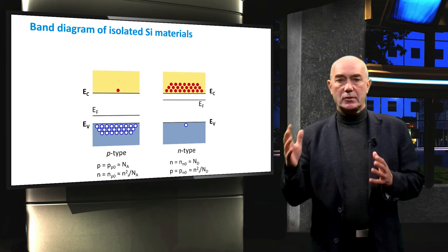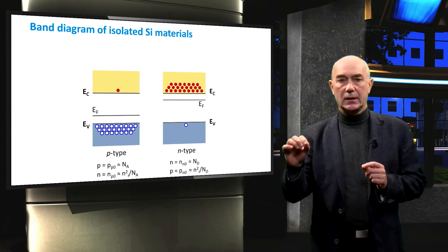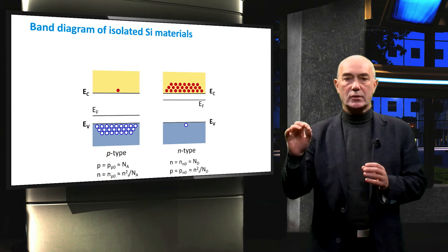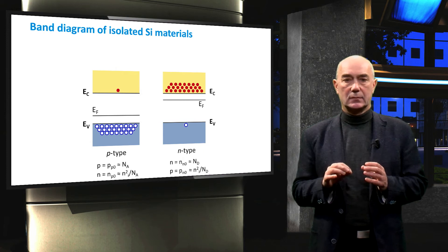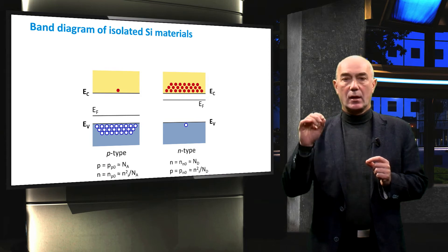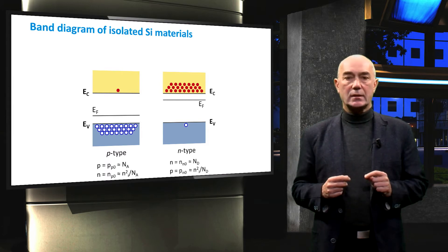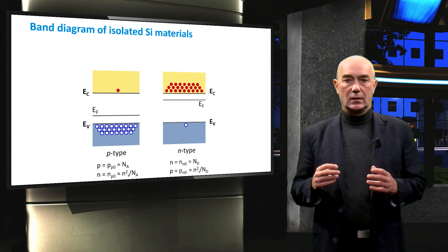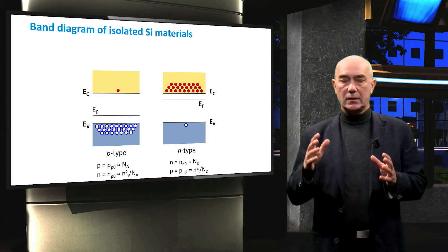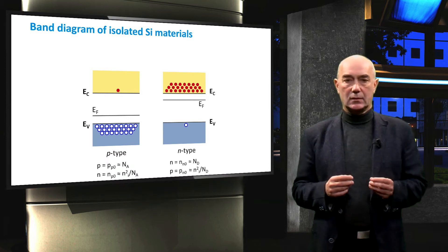These are the band diagrams of isolated P-type and N-type semiconductor materials. We see that the Fermi level is close to the valence band in the P-type semiconductor and close to the conduction band in the N-type semiconductor. In the P-type semiconductor material, holes are the majority carriers and their concentration approximates to the acceptor concentration. The concentration of minority carriers, in this case electrons, is calculated by dividing the square of the intrinsic carrier concentration by the acceptor concentration.